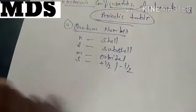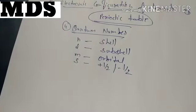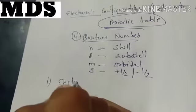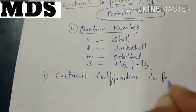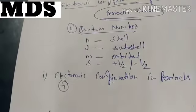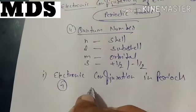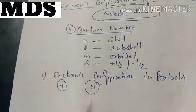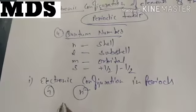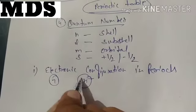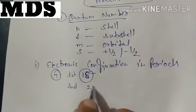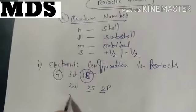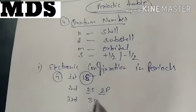The modern periodic table is divided into periods and groups. Let's discuss first about the electronic configuration in periods. You know that there are seven periods. For the first period, the configuration will be 1s. For the second period, it will be 2s and 2p, where n is 2. For the third period, the configuration will become 3s and 3p.